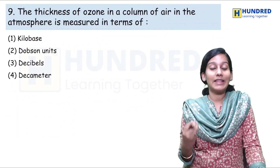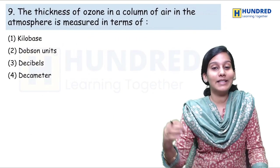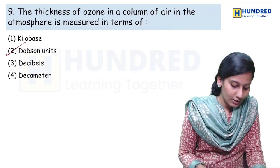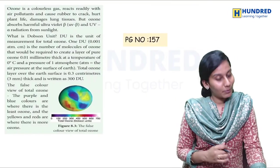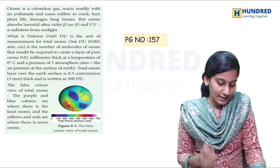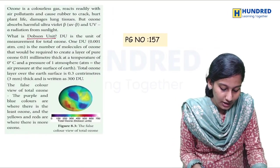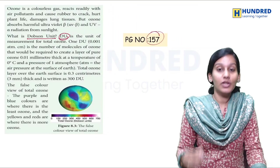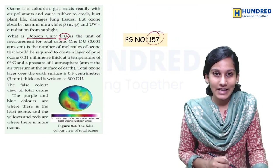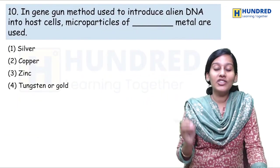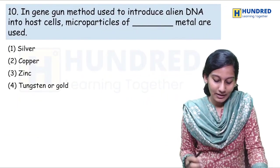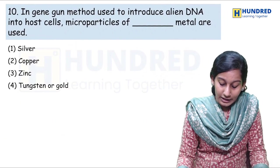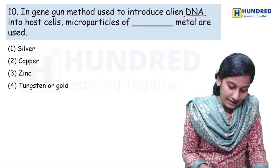Next: the thickness of ozone in a column of air in the atmosphere is measured — nothing but the ozone thickness unit — which is very easy: Dobson's unit. You can definitely find it in the book — Dobson's unit — on page number 157.